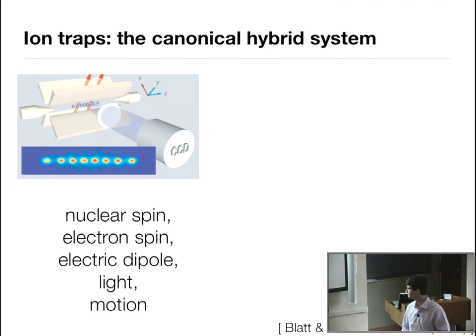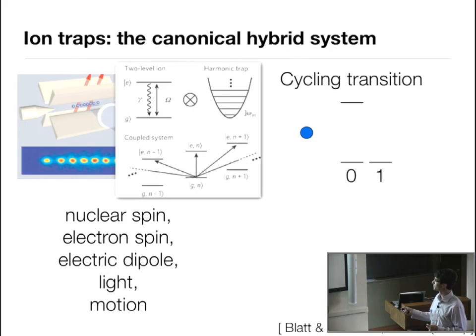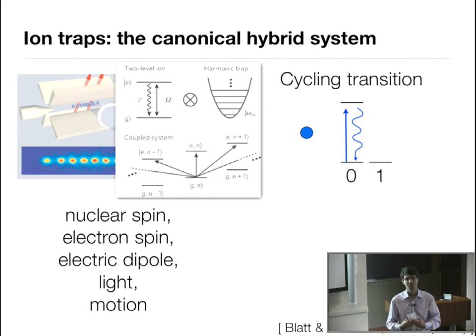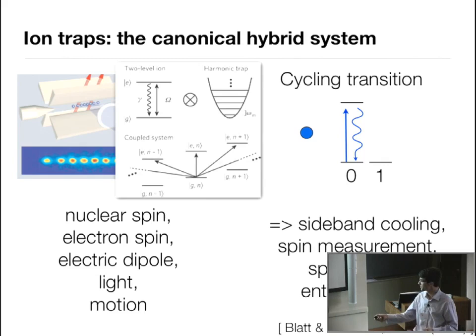The fundamental features involve a two-level ion trapped in a harmonic trap with the eigenstates of the harmonic oscillator. One crucial feature is a good cycling transition — the ability to drive the system with a laser and have a photon scattered on the zero state and nothing on the one state. This is easy in atomic systems with good symmetries. Cycling transitions play a crucial role in sideband cooling, spin measurements, and spin-motion entanglement.